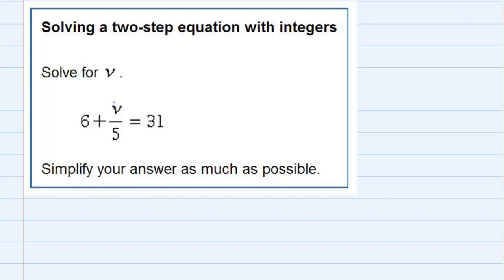Solving a two-step equation with integers. We're asked to solve for v, and I have one v on the left-hand side, so I just need to get that v by itself.